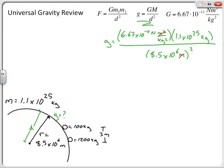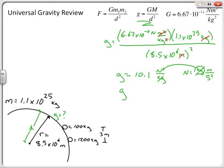The units cancel out, but this time I can only cancel one of the kilograms in the denominator with the kilogram in the numerator. After plugging this into the calculator, g equals 10.1, and the remaining units are newtons per kilogram. Since a newton equals a kilogram meter per second squared, the kilogram cancels, giving a final answer of g equals 10.1 meters per second squared.